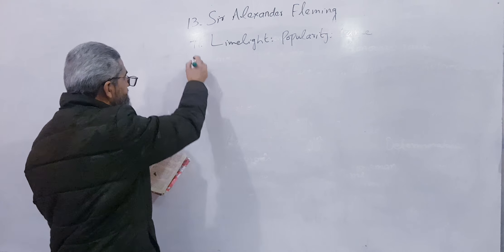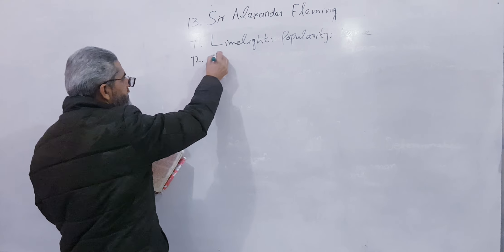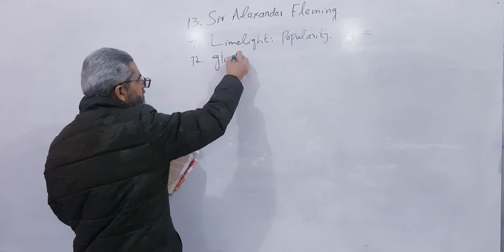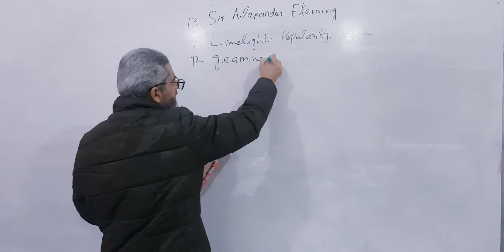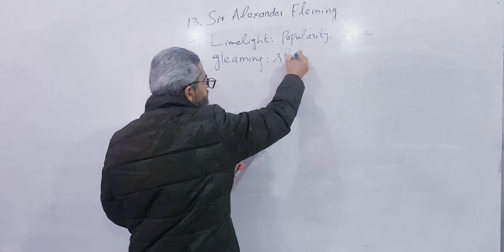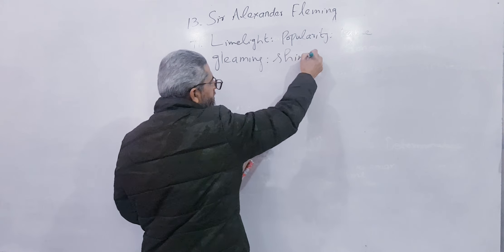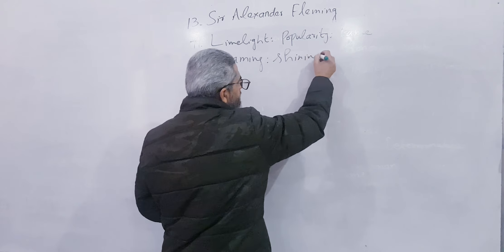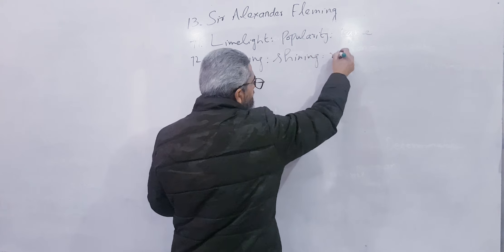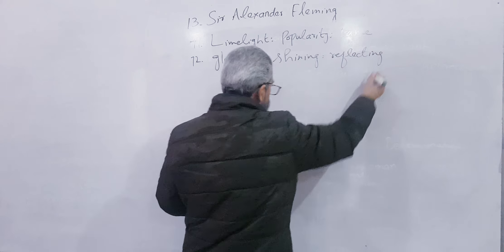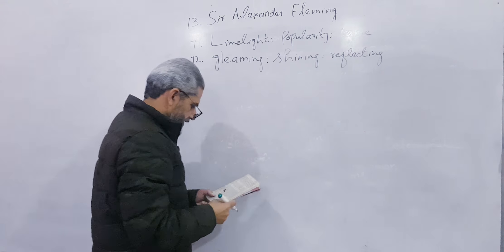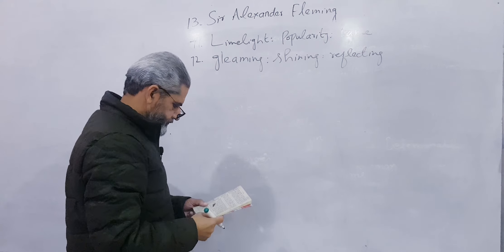Number 72: Gleaming. Gleaming means chamakdar (shining) — shining, reflecting, glowing.